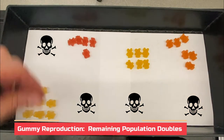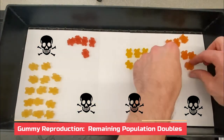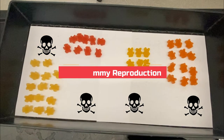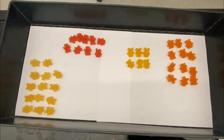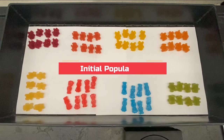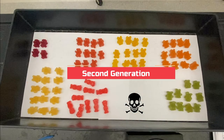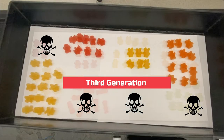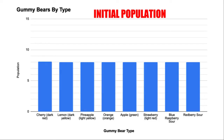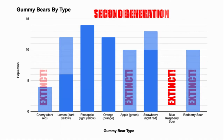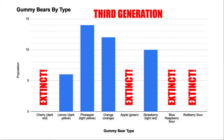Now I'm repeating the process of gummy bear asexual reproduction. The remaining gummy bears double in population and we're going to see a very different population than what we started with. This is what we ended up with after two rounds of natural selection. Here's our initial population, after one round of natural selection here's our change, and after two rounds of natural selection this is what we ended up with. In graph form: here's what we started with, after one round of natural selection we're here, and after a second round of natural selection we are looking like this. What a change.